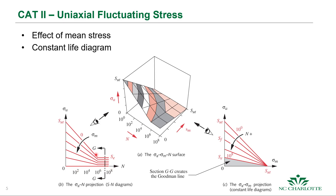Another way to view the effect of mean stress is the constant life diagram. Starting with the ultimate tensile strength on one axis and cycles on the x-axis, adding a nonzero tensile mean stress reduces fatigue life. Plotting this in three dimensions shows how life is reduced. The gray section of that graph corresponds to the Goodman diagram — starting at fatigue strength and going down to ultimate tensile strength.